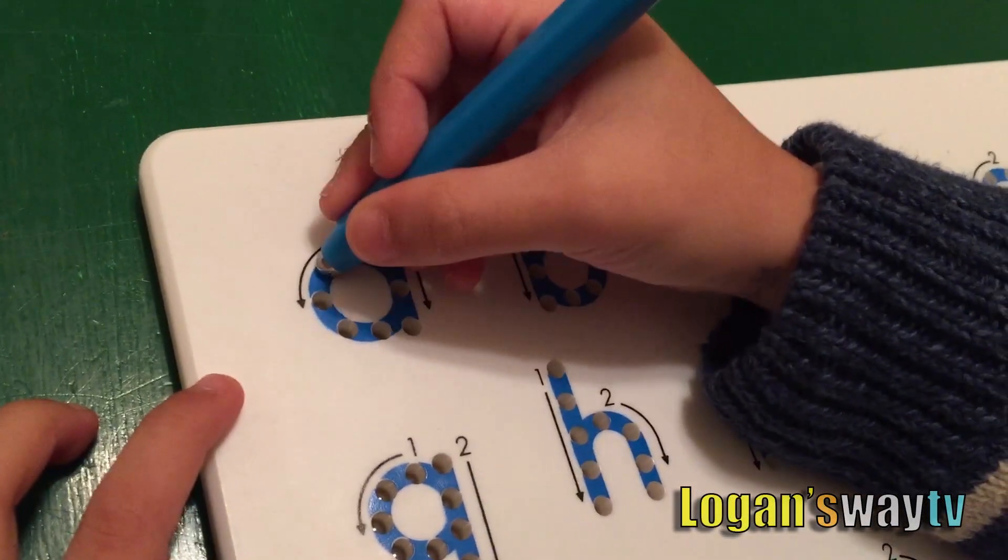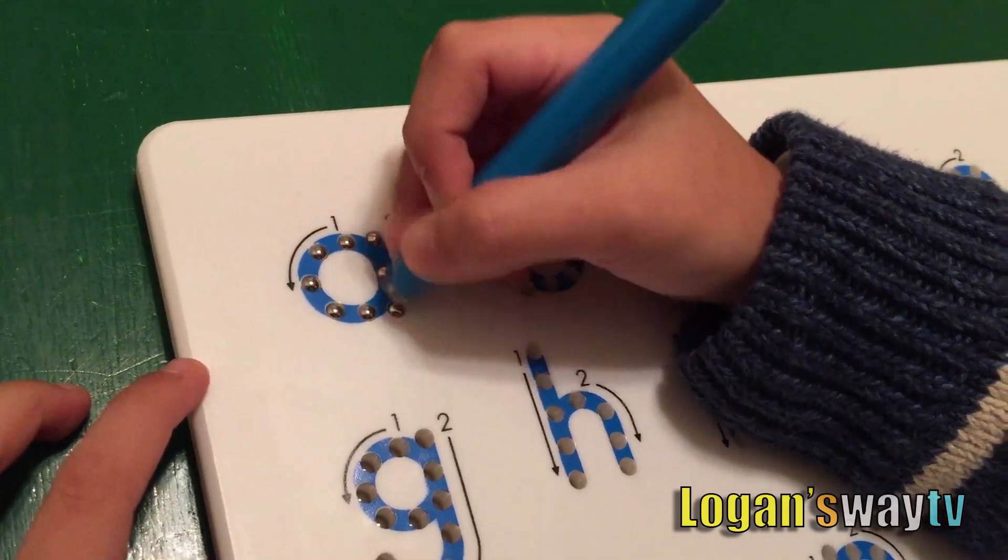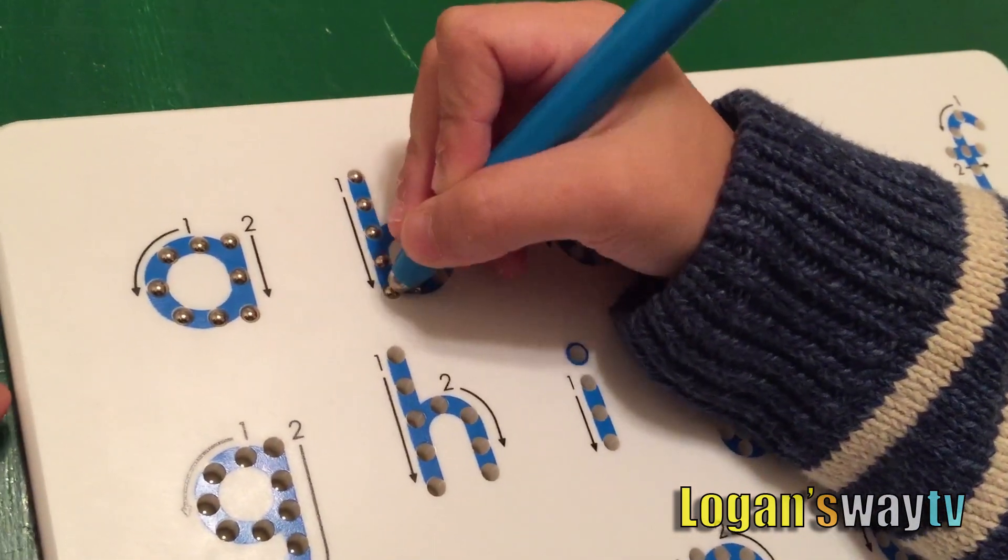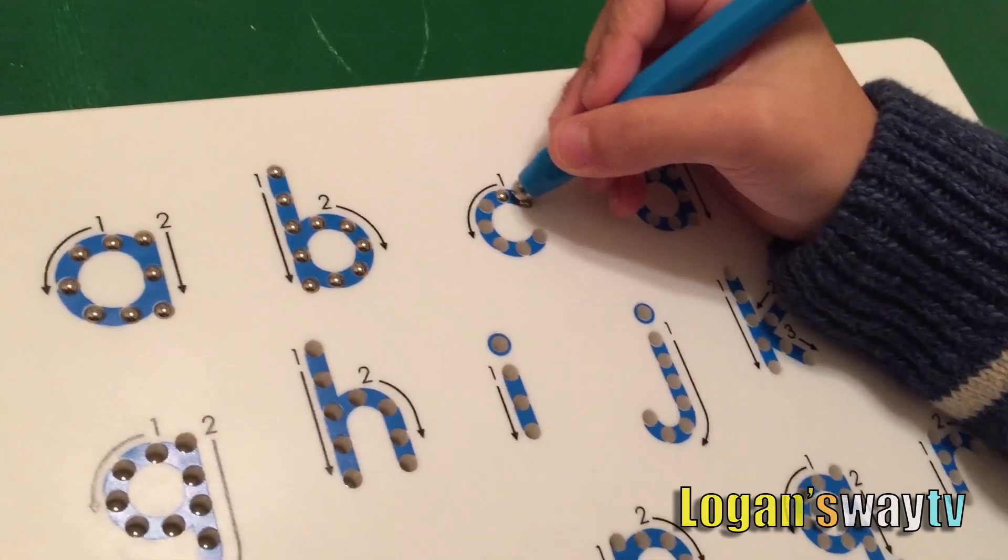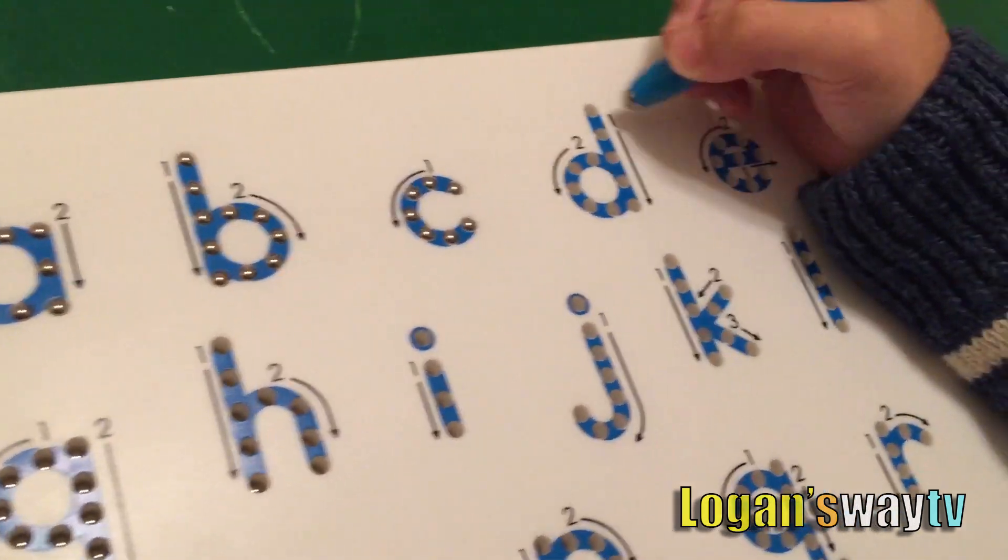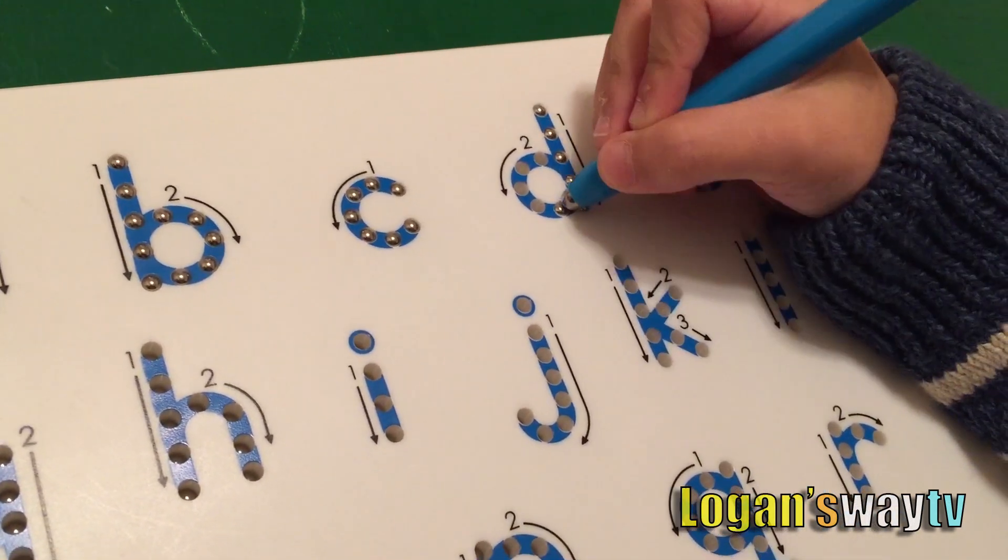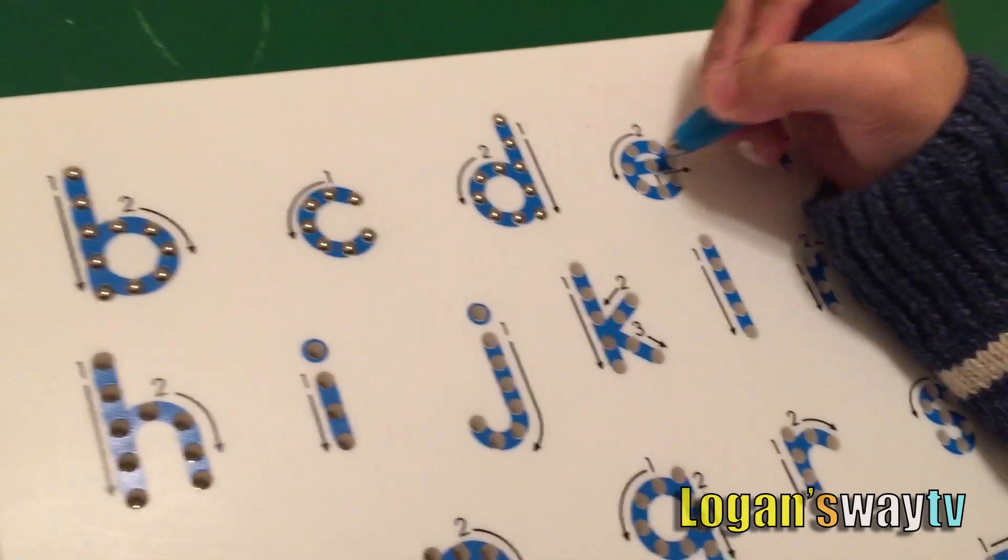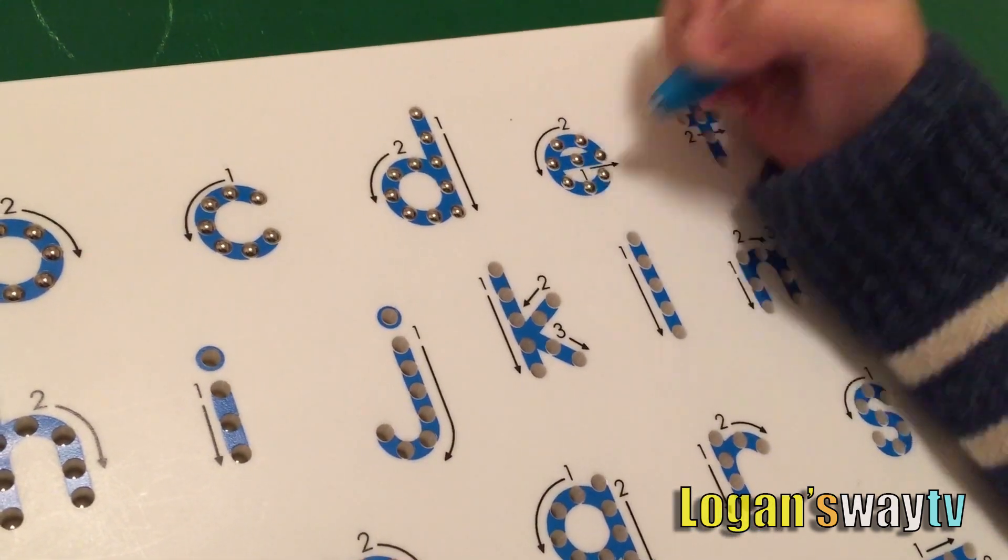A is for apple, B is for ball, C is for cat, D is for dog, E is for elephant.